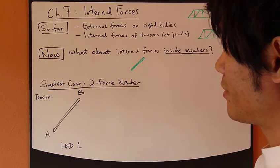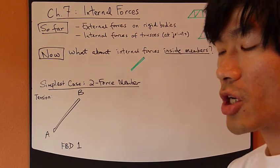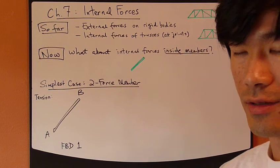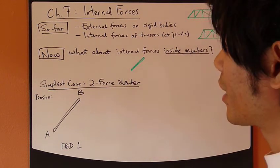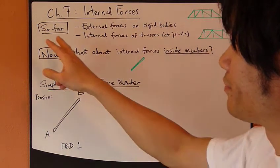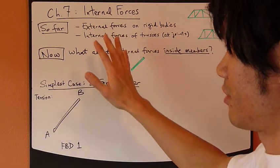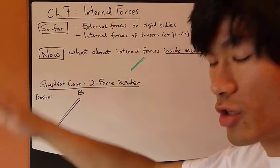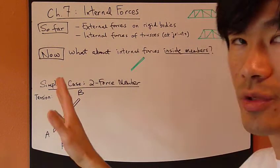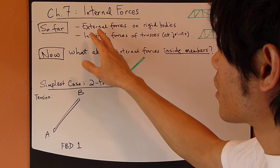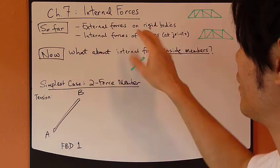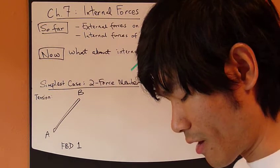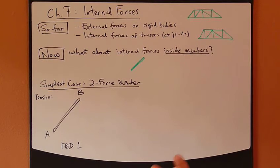Chapter 7 discusses internal forces. Now, let's look at it more closely. So far, what we've discussed — really from Chapter 1 through Chapter 6 — are concerned with external forces on the rigid body, external forces applied on the rigid body.